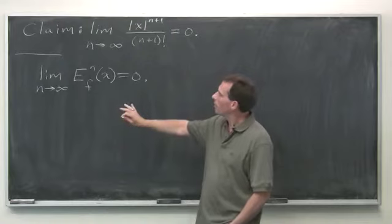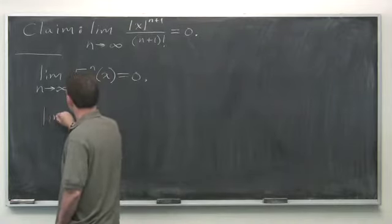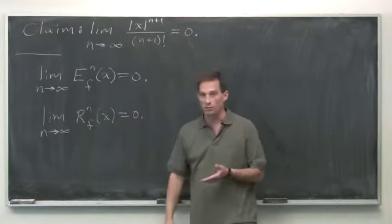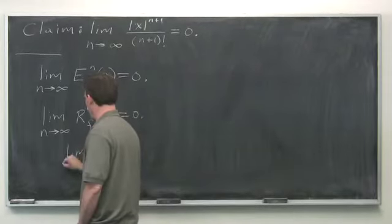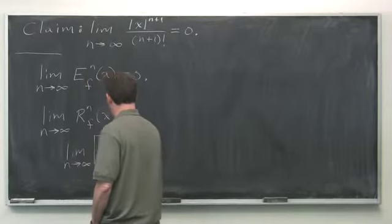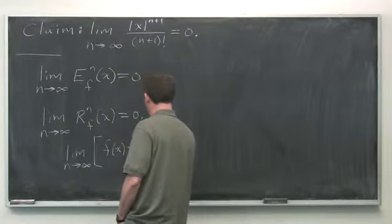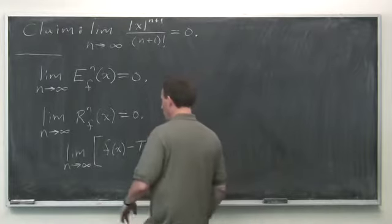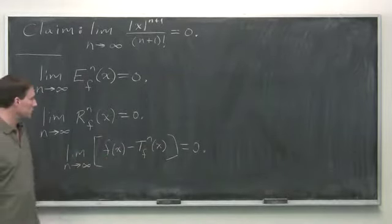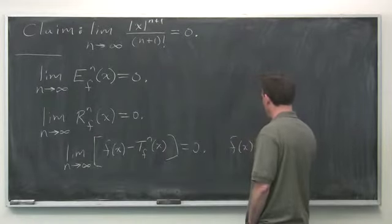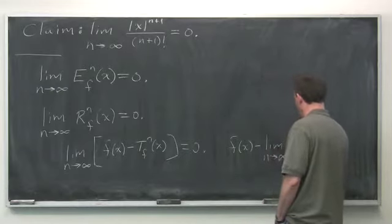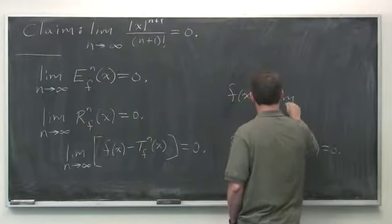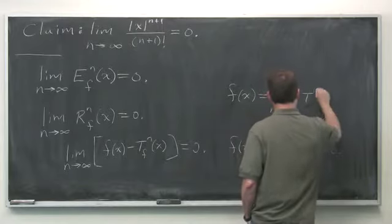Since the error is the absolute value of the remainder, and something's absolute value goes to zero if and only if the thing itself goes to zero, this is equivalent to saying the limit as n → ∞ of the remainder is zero. Remember what the remainder is: it's f(x) minus the value of the nth order Maclaurin polynomial. So this is the same as saying f(x) minus the limit as n → ∞ of T_n(x) equals zero — that is, f(x) is the limit as n → ∞ of the Maclaurin polynomials.